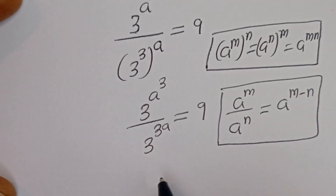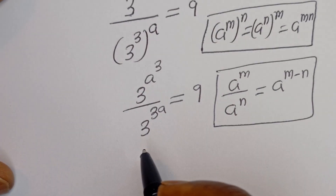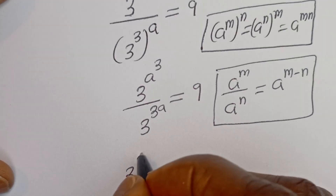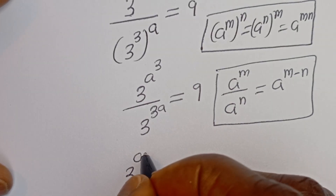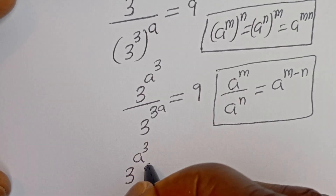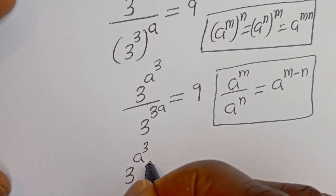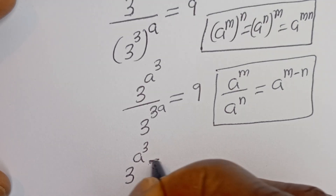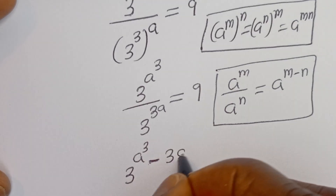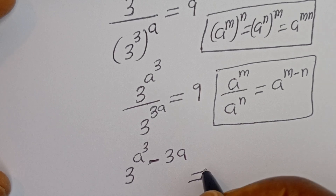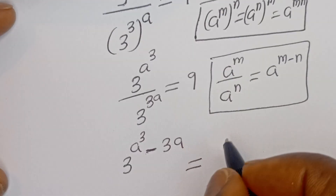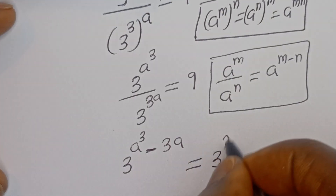This can be written as 3 to the power of A to the power of 3 minus 3A, is equal to 9, which can be written as 3 squared.